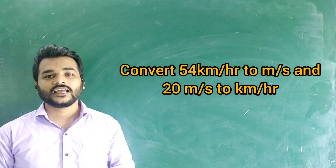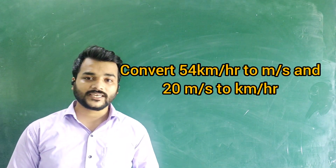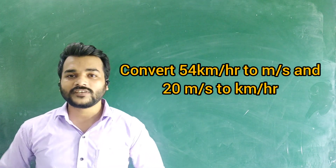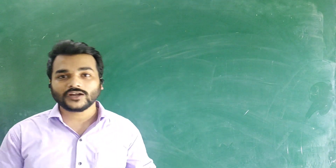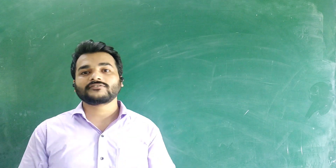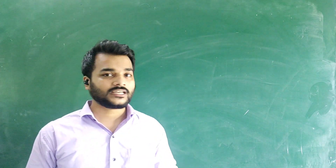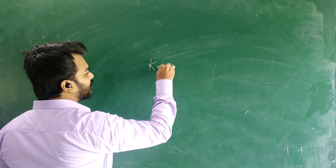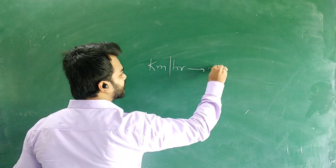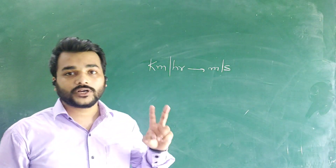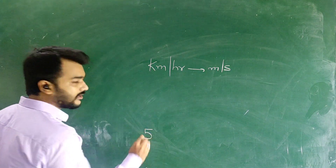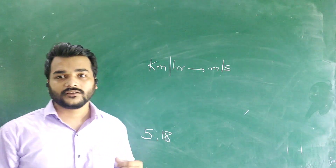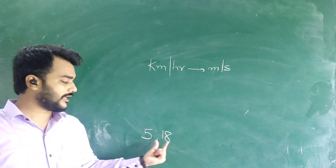The next question is: convert 54 km/h to m/s, and 20 m/s to km/h. The trick to remember: you just need two numbers — 5 and 18. Five is the small number and 18 is the big number. When converting from a larger unit to a smaller unit, you multiply by the smaller value upon the larger value.